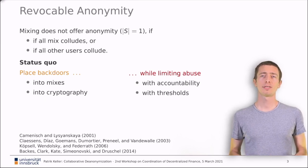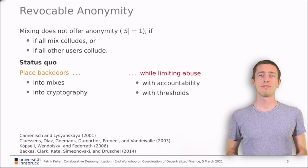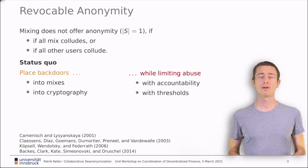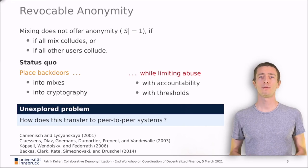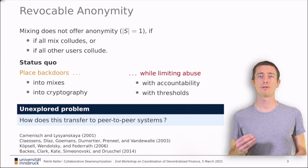The problem with all these approaches is that they assume a privileged party that holds some sort of master key that enables de-anonymization. What we have found to be unexplored is whether and how we can transfer revocable anonymity to cryptocurrencies that are built on a philosophy that vehemently rejects the existence of such privileged parties.